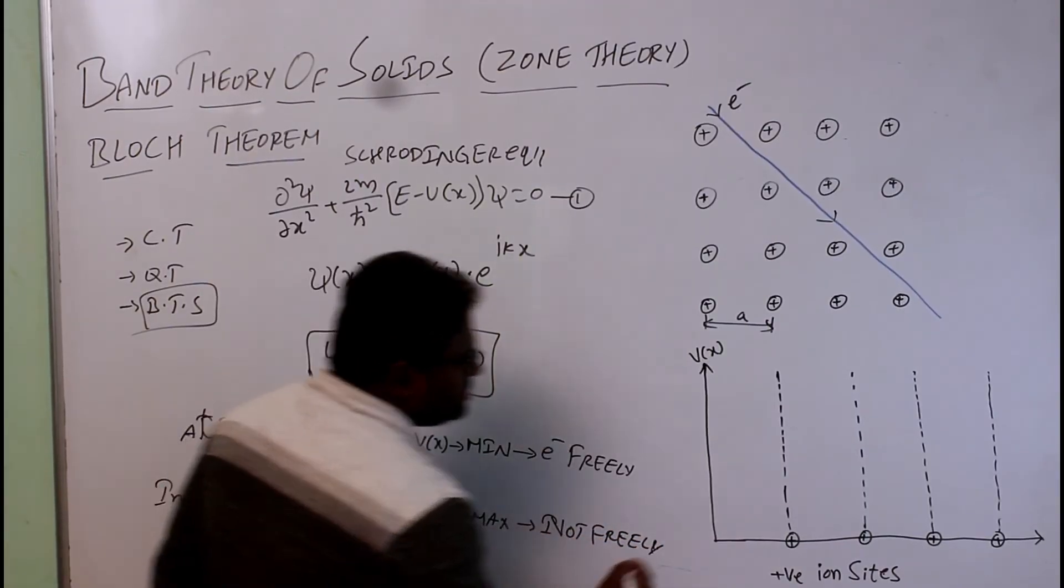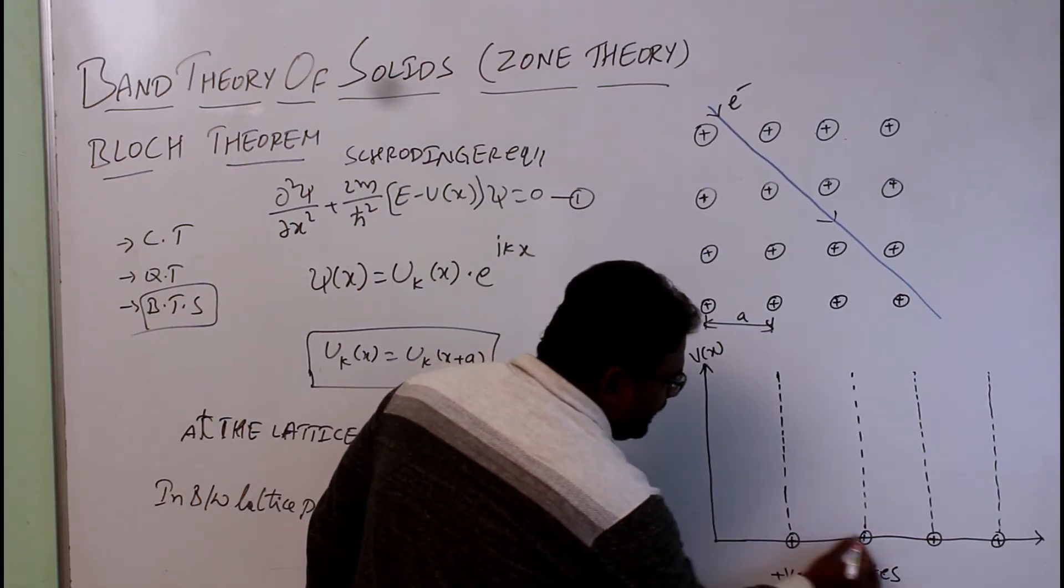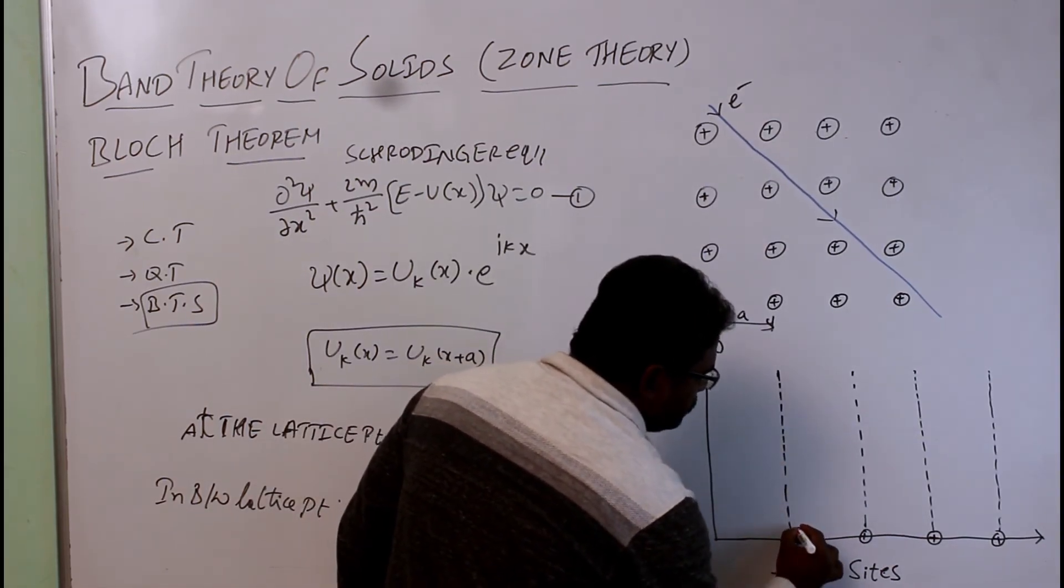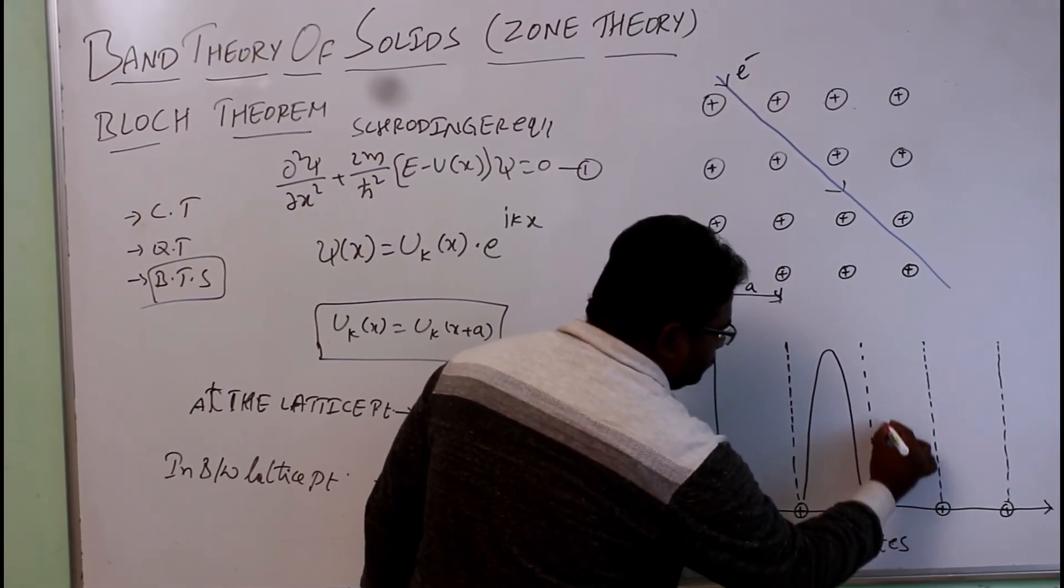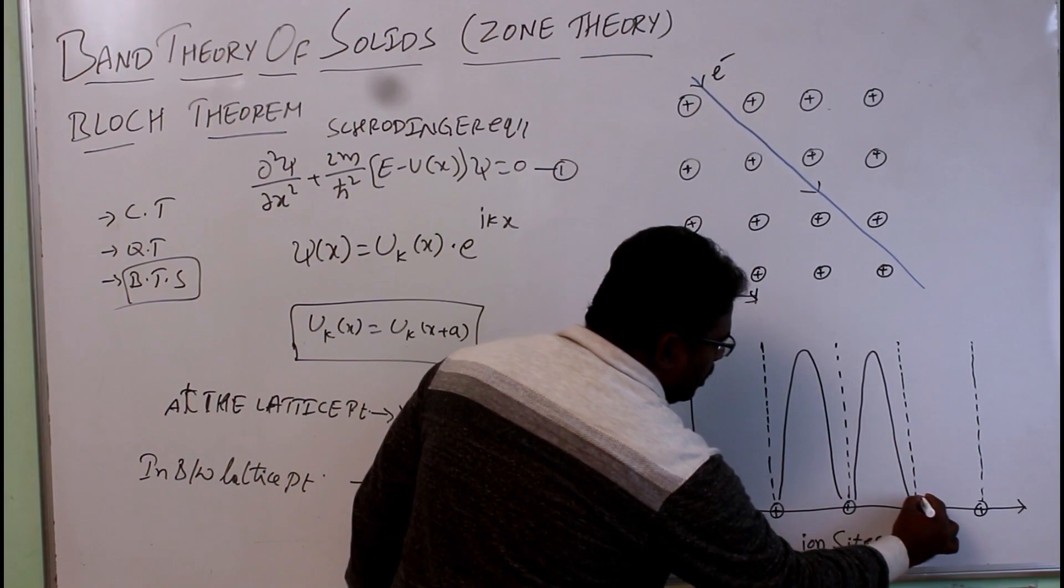The potential graph can be given as: at the lattice point minimum, in between it is maximum. The graph can be drawn like this. So simply this is called the Bloch theorem.